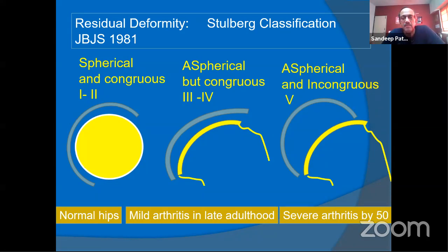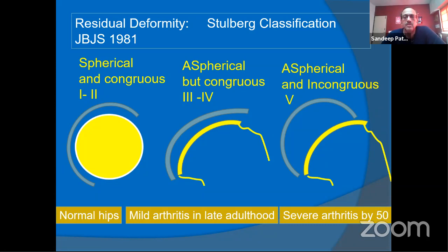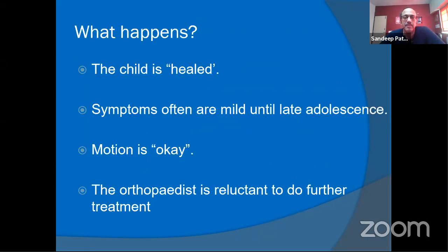At the stage of primary healing, assess using the Stulberg classification. Is the hip spherical and congruous — round on round — which should last 50-plus years? Is it aspherical but congruous — surfaces matching but oval — achievable by coverage procedures? Or is it neither spherical nor congruous, which is the worst outcome leading to severe arthritis as early as the third decade? Our aim is to make the hip spherical and congruous, but if you can't, at least try to make it aspherical but congruous.